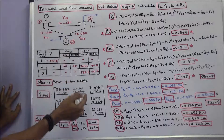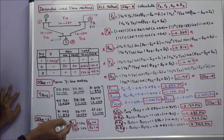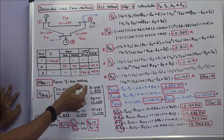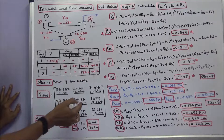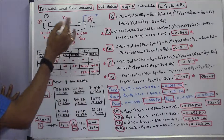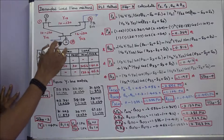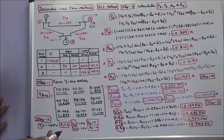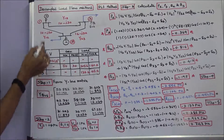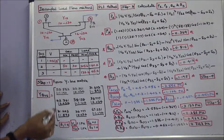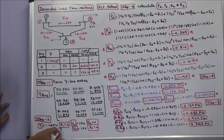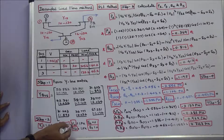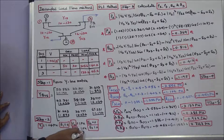Set the calculator in radian mode. Step 1: Form the Y-bus matrix. This is the Y-bus matrix of the system. Step 2: Initialize the bus voltages. The slack bus voltage is given as 1.04 at delta 1 = 0. For V2 and V3, we assume: V2 = 1 per unit, delta 2 = 0; V3 = 1 per unit, delta 3 = 0.